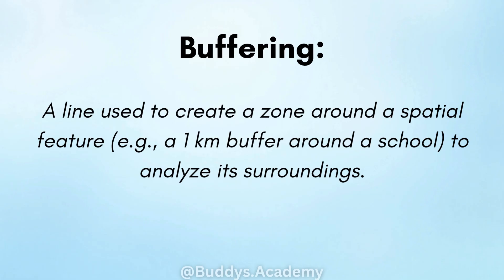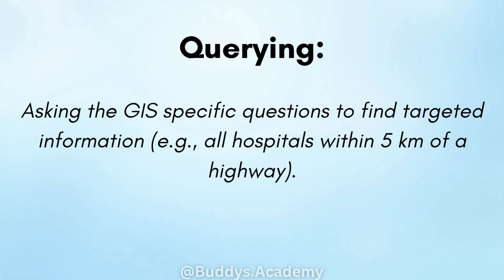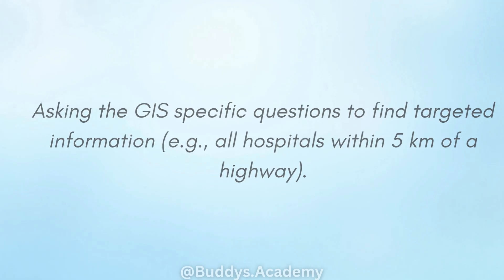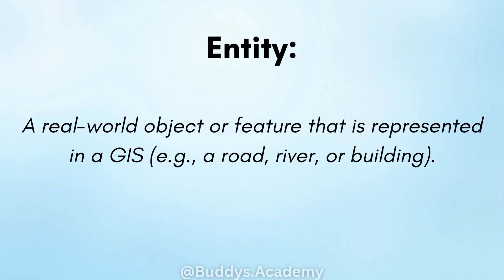Buffering: this is a line that is used to create a zone around a spatial feature — for example, a one kilometer buffer around a school to analyze its surroundings. Querying: this is asking the GIS specific questions to find targeted information — for example, all hospitals within five kilometers of a highway. Entity: this is a real world object or feature represented in a GIS, such as a road, river or building.